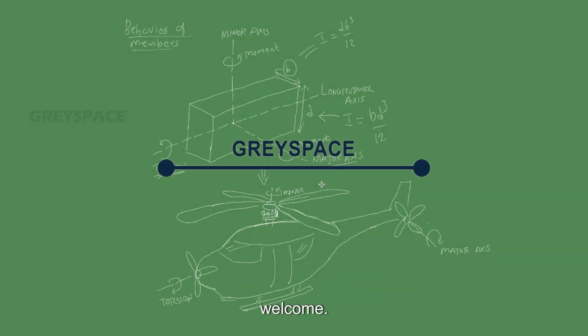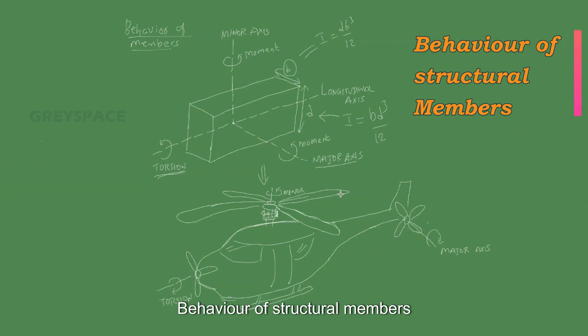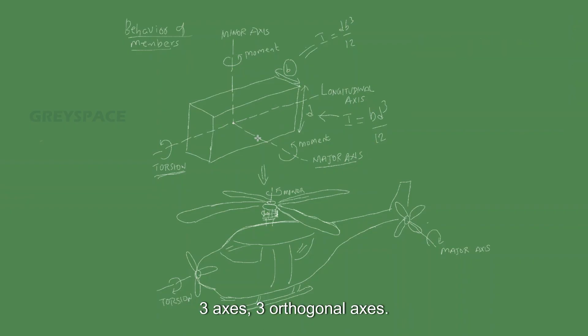Hi there, welcome. Let's learn about behavior of structural members. In this video, behavior of structural members can be calibrated using three axes, three orthogonal axes. These three axes are perpendicular to each other. Behavior such as bending moment, shear...